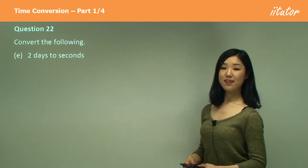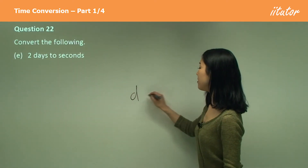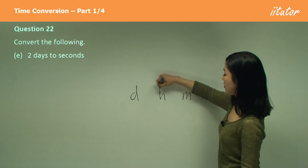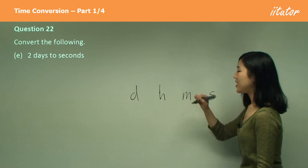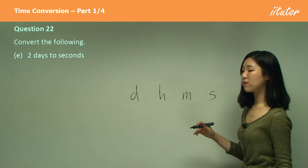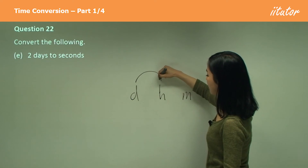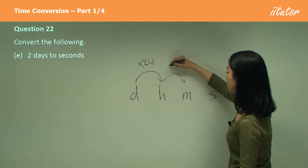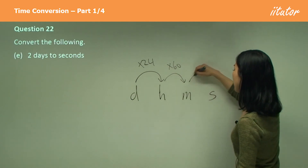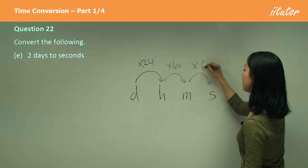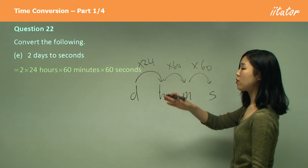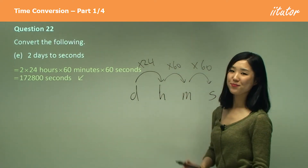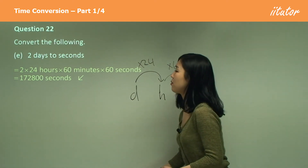Two days to seconds. We go through days → hours → minutes → seconds. Large to small, we must multiply. Days to hours: times 24. Hours to minutes: times 60. Minutes to seconds: times 60 again. So we go 24 times 60 times 60, which gives a big number. That's your answer.